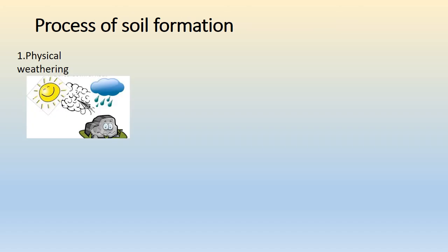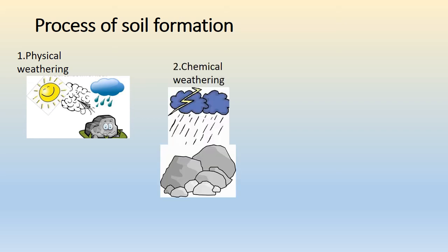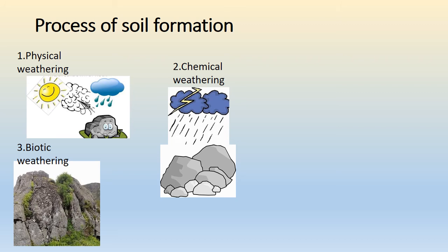The process of soil formation involves three types of weathering. Physical weathering is the breaking of rocks due to high pressure, high temperature, and wind. Chemical weathering is the breakdown of rocks into small pieces due to acid rain and other chemical reactions. Biological weathering is caused by flora and fauna, which breaks rocks down into smaller particles.